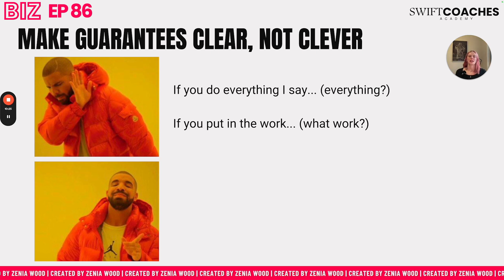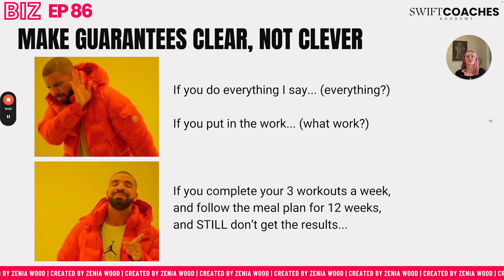The thing that's really important is we want to make our guarantees clear, not clever. A lot of people say with performance guarantees things like 'if you do everything I say' — and I'm like, what is 'everything'? Do you say drink four liters of water or drink 3.8? Does that count? Or 'if you put in the work' — what work? Let's get really granular on what they need to do to either execute on and be able to get the guarantee or not. So instead, you could say something like: if you complete your three workouts a week and follow the meal plan for 12 weeks and still don't get the results, then you can insert the guarantee.